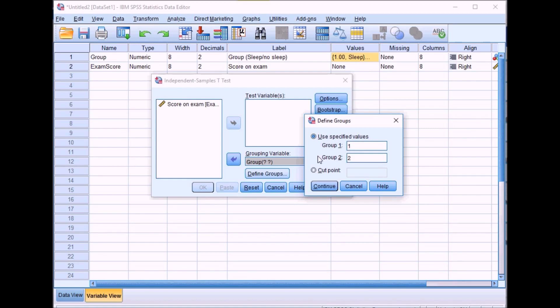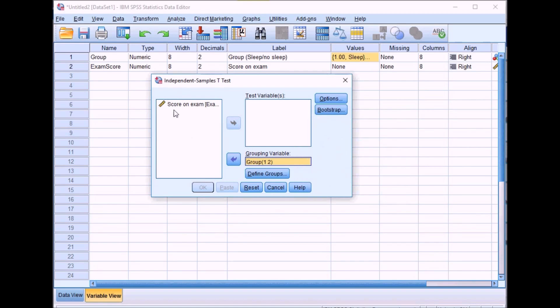If you used different codes, zero and one, you'd just swap those with the numbers you've used. Click on continue, and then put the dependent variable exam score into the test variables box.